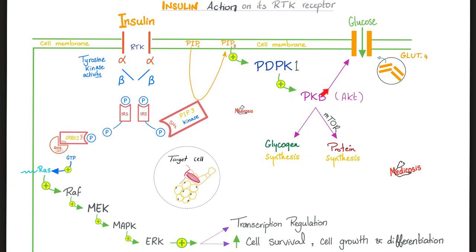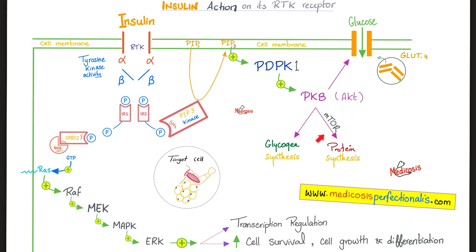Protein kinase B is pro-growth and anabolic; therefore, you also get protein synthesis — that's why your cell grows, and that's why cancer grows. And this is the story of mTOR, which is a huge story in pharmacology. That was the first story: the PI3 kinase pathway.